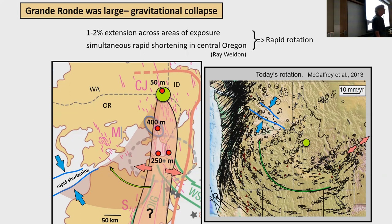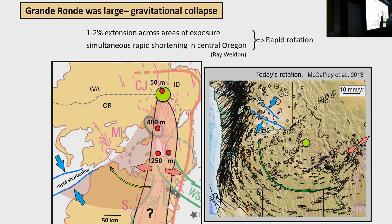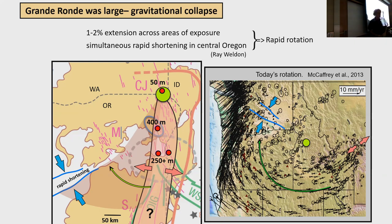This actually looks very similar to what's going on today: instead of having buoyancy in eastern Oregon, we now have the buoyancy under the corner of Wyoming at Yellowstone, and we see material moving out, rotating around, and driving contraction in Portland and the Yakima folding thrust belt. A similar process in many ways, just on a larger scale as Yellowstone has propagated.